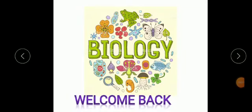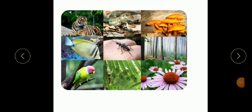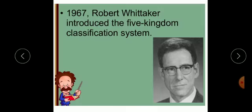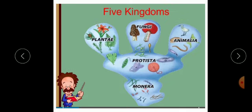Students, welcome back to the biology class. There are billions of different kinds of living organisms on earth. These organisms have been classified into five kingdoms by Robert Whittaker. The five kingdoms are Kingdom Monera, Kingdom Protista, Kingdom Fungi, Kingdom Plantae, and Kingdom Animalia. Today, we will discuss how Kingdom Animalia is classified further.